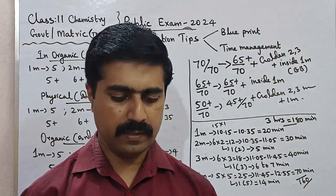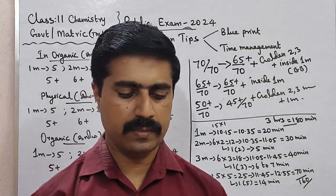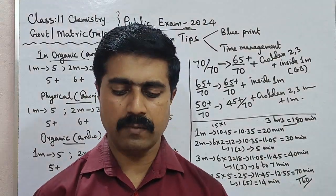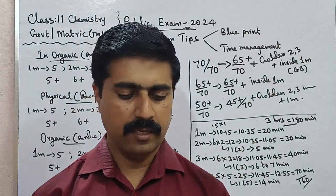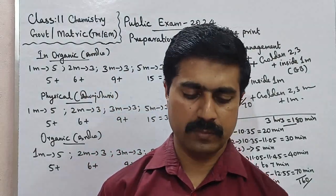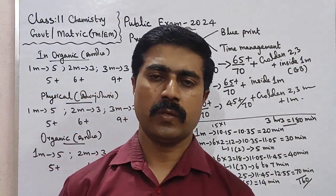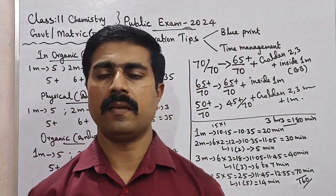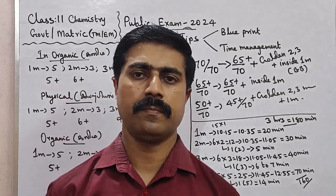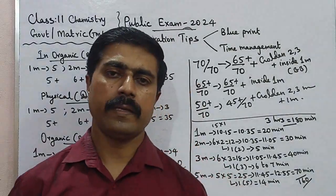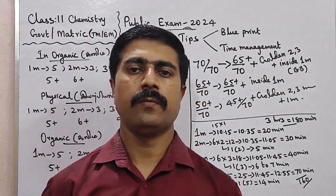Last question 28: Placenta is an endocrine tissue — justify. Lesson 2, book bag, question number 24. So these are the golden top questions — prepare well and do your best. All the best. Thank you.